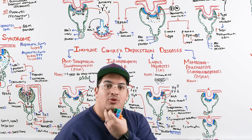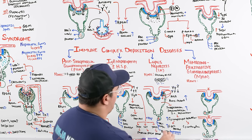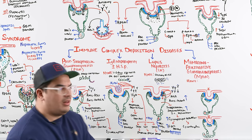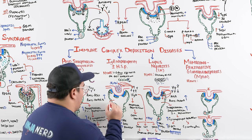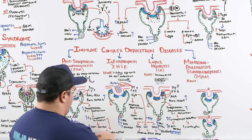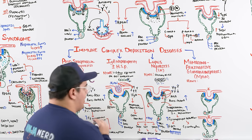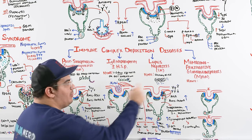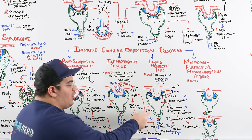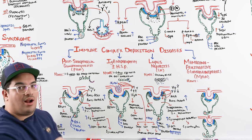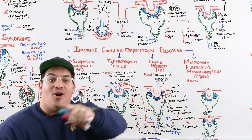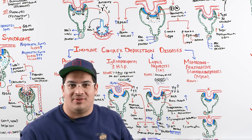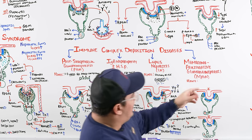Lupus nephritis can also cause rapidly progressive glomerulonephritis. To summarize which immune complex types cause RPGN: lupus nephritis, IgA nephropathy plus or minus Henoch-Schönlein Purpura, and post-streptococcal GN. Additionally, anti-GBM disease and ANCA vasculitis can cause RPGN. The ones that do NOT cause RPGN are hereditary nephritis and membranoproliferative glomerulonephritis.